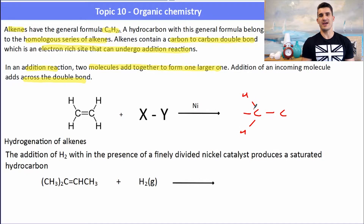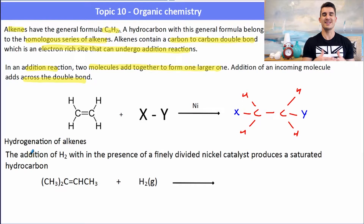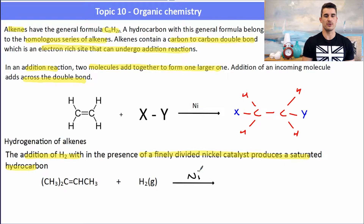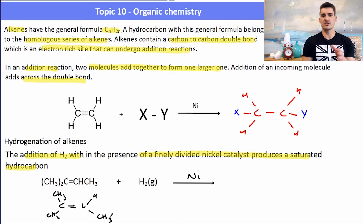Here we have an alkene, ethene, reacting with a compound XY with a nickel catalyst. The double bond breaks, allowing X to bond to one side and Y to the other side of the molecule — it is added across the double bond. If we want to hydrogenate an alkene, we add hydrogen in the presence of a fine nickel catalyst; the double bond breaks and an extra hydrogen adds to each end.